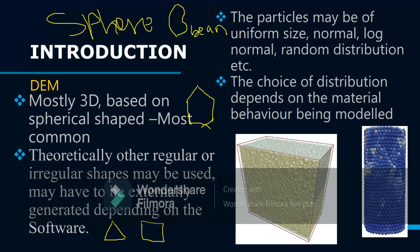Particles may be of uniform size or follow distributions such as normal distribution, log-normal distribution, random distribution, or a user-defined distribution where you can input a mathematical formula. The choice of distribution depends on the material behavior that needs to be modeled. If you test and find that one distribution models the behavior well, then you can go for it. There are also other distributions like chi-square, Poisson, and so forth.